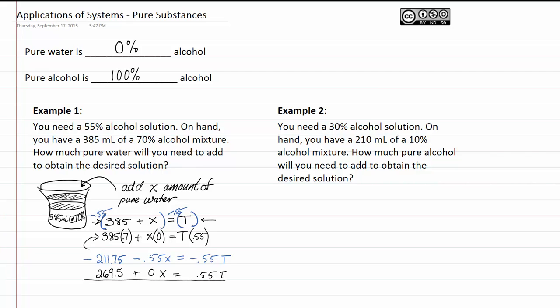When I add those together, I get 0 is equal to negative 0.55x. And when I add these together, I get 57.75.